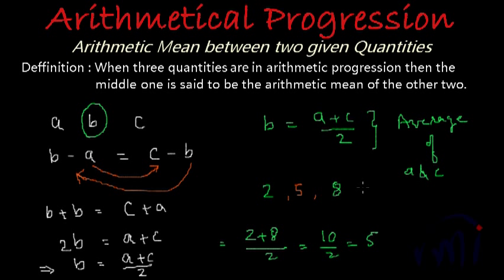And yes, they are in arithmetic progression. 5 minus 2 gives us 3 and 8 minus 5 also gives us 3. So they have a common difference of 3 among themselves. So this is an arithmetic progression and 5 is the arithmetic mean of 2 and 8.